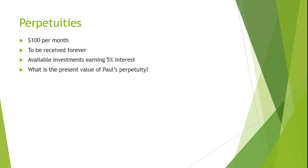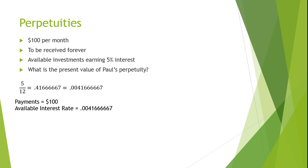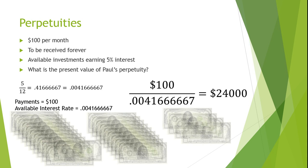Since Paul's cash flows are occurring monthly, we need to divide our rate of 5% by 12 before plugging it into our formula. So our cash flows remain the same at $100. However, our interest rate changes because we're dividing 5% by 12, giving us an interest rate of 0.41666667%, which expressed in decimals is 0.0041666667. We plug these values into our perpetuity formula, and we find that Paul's perpetuity is worth $24,000 in present value terms.